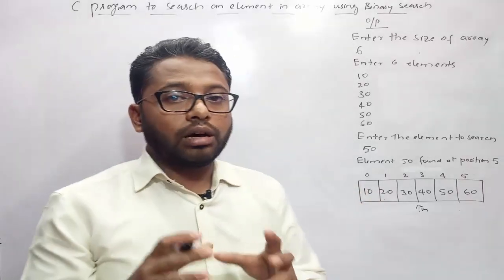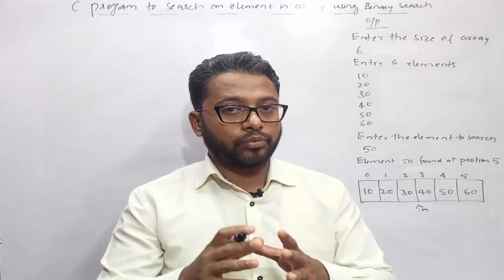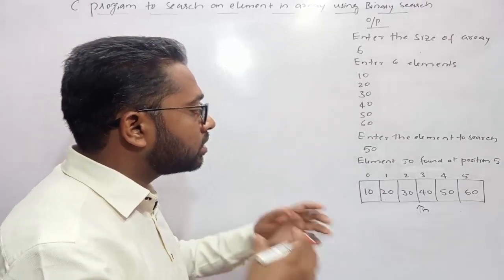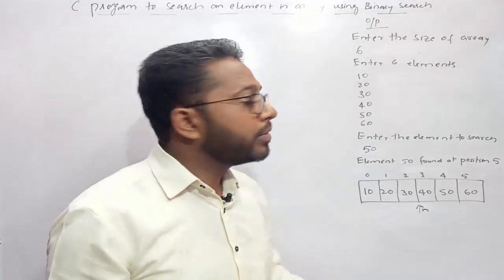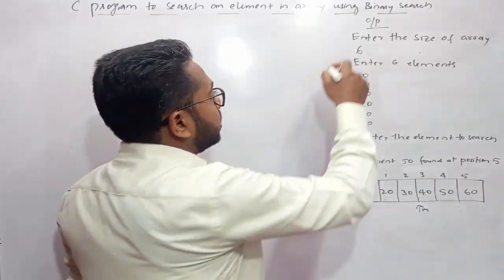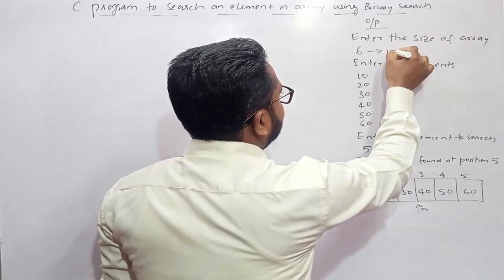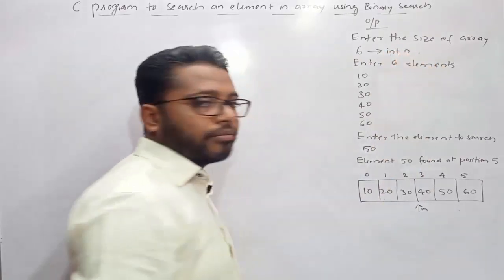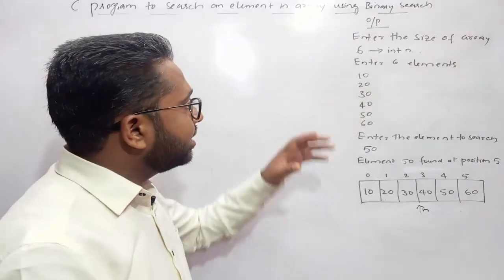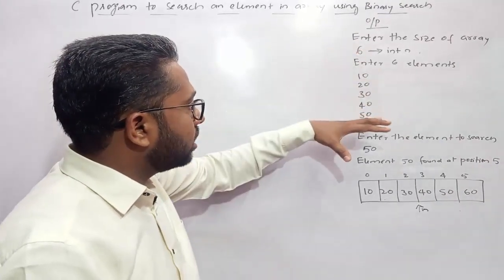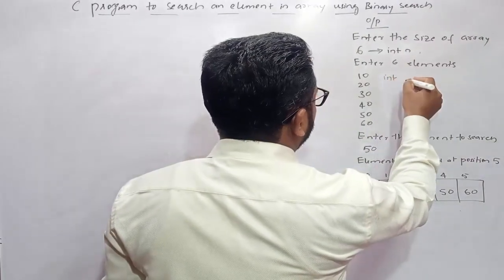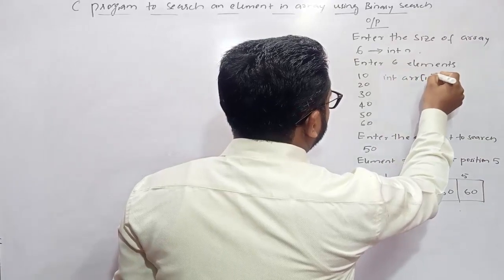This is how a binary search algorithm works. Here you can see I have written down the output. With the help of this output we will find out how many variables are required. When the program gets executed, it will ask the user to enter the size of the array — the user will enter 6. I need to store this inside an integer variable n, and I also need to create an array of type integer of size 10 to store the items.